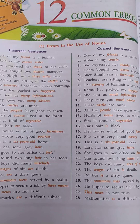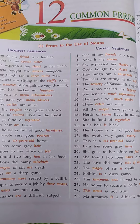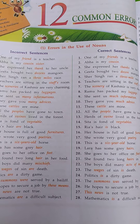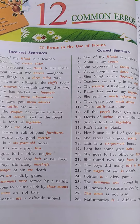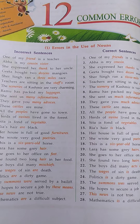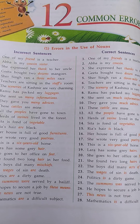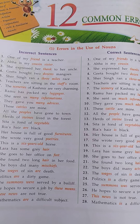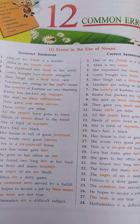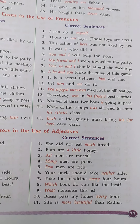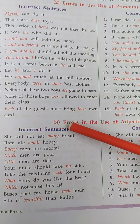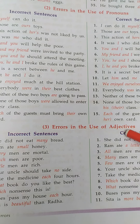Good morning students. This is your English class. Now we are studying chapter 12 in your English grammar book. The topic is common errors. In the previous classes we have already studied about the errors in the use of nouns and about the errors in the use of pronouns. Today in this class we are going to study about the errors in the use of adjectives. Let's open page number 77 in your English grammar book. See here, number 3: errors in the use of adjectives.